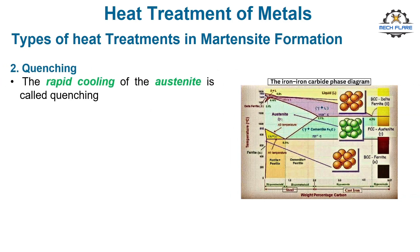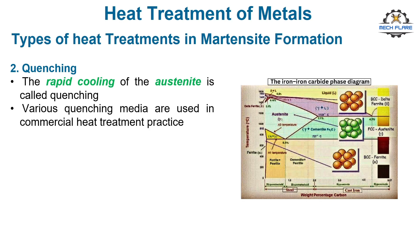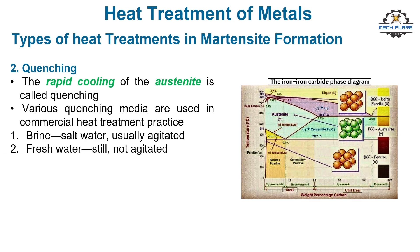The rapid cooling of the austenite is called quenching. The cooling rate depends on the quenching medium and the rate of heat transfer within the steel workpiece. Various quenching media are used in commercial heat treatment practice: 1. Brine — salt water, usually agitated; 2. Fresh water — still, not agitated; 3. Still oil; 4. Air. Quenching in agitated brine provides the fastest cooling of the heated part surface, whereas air quench is the slowest.